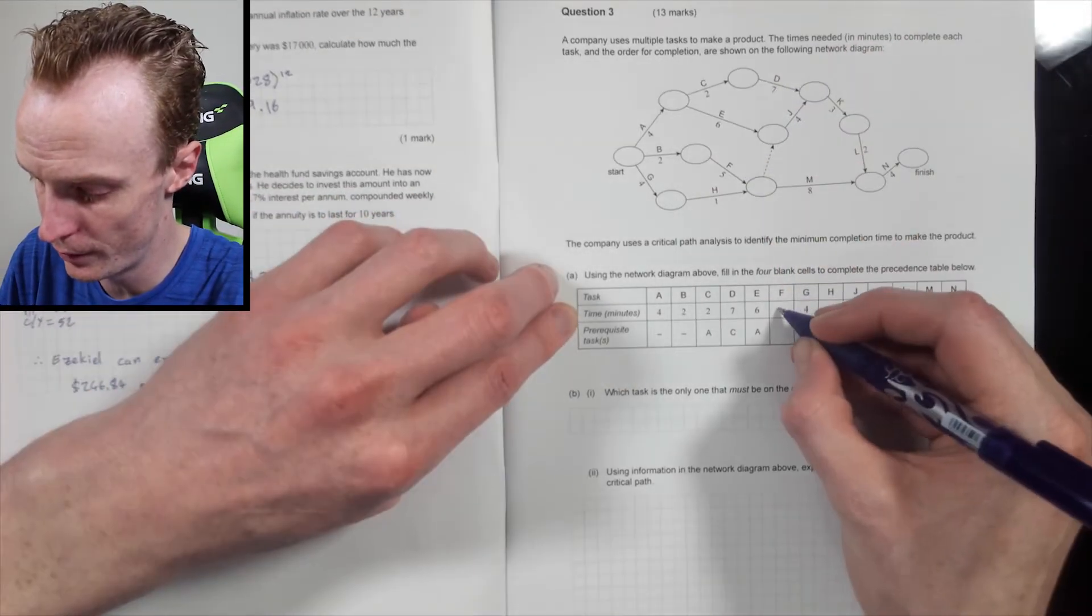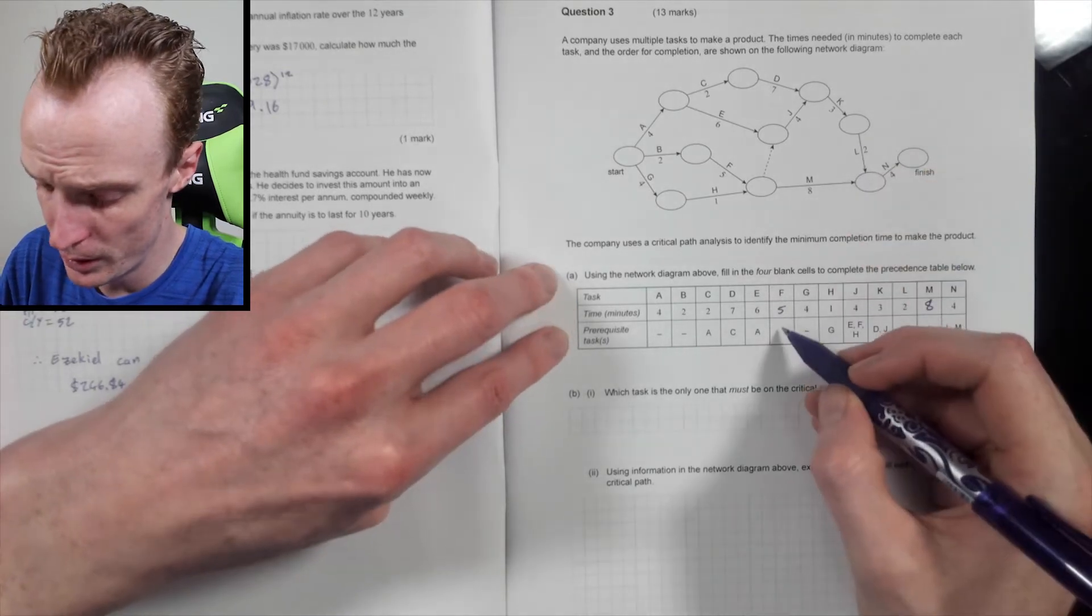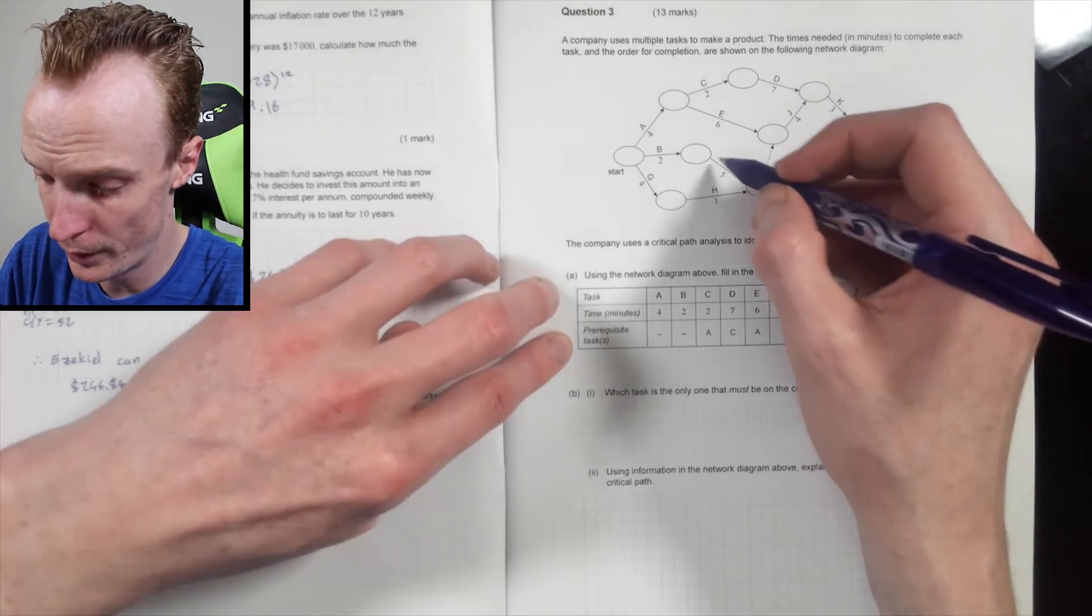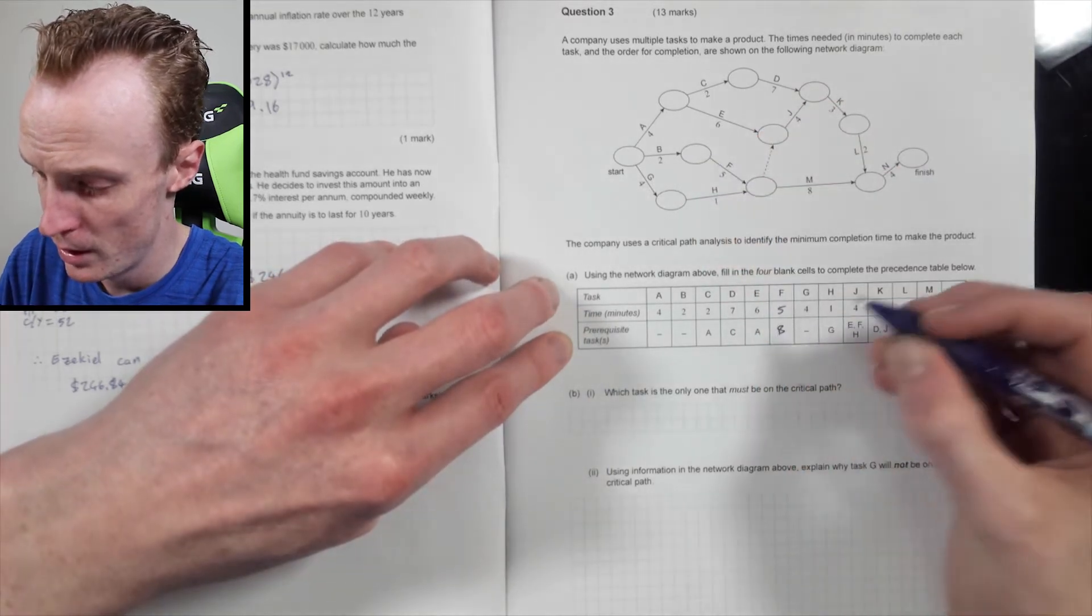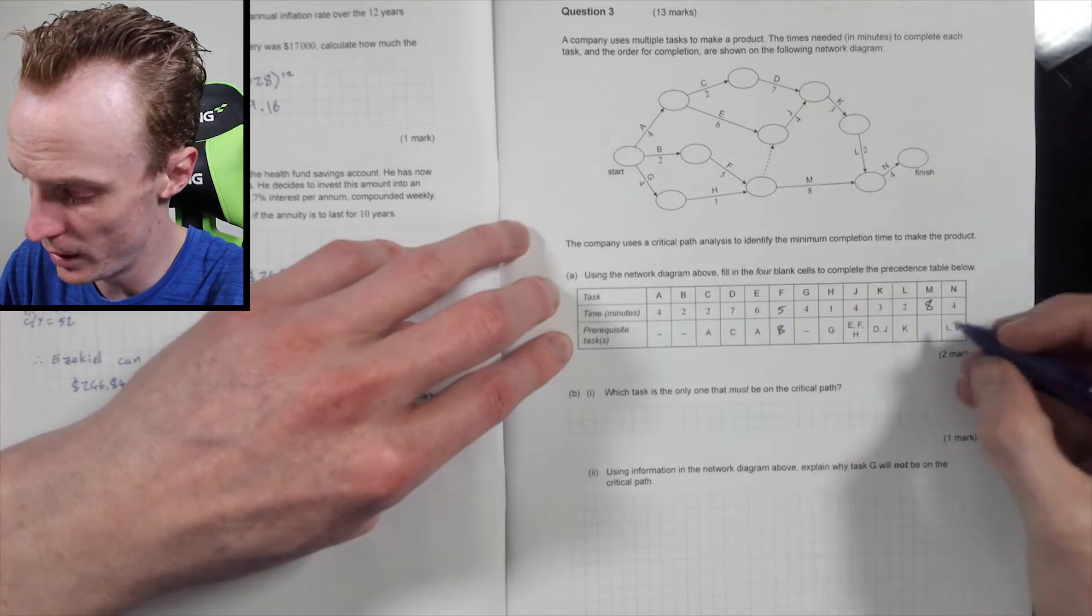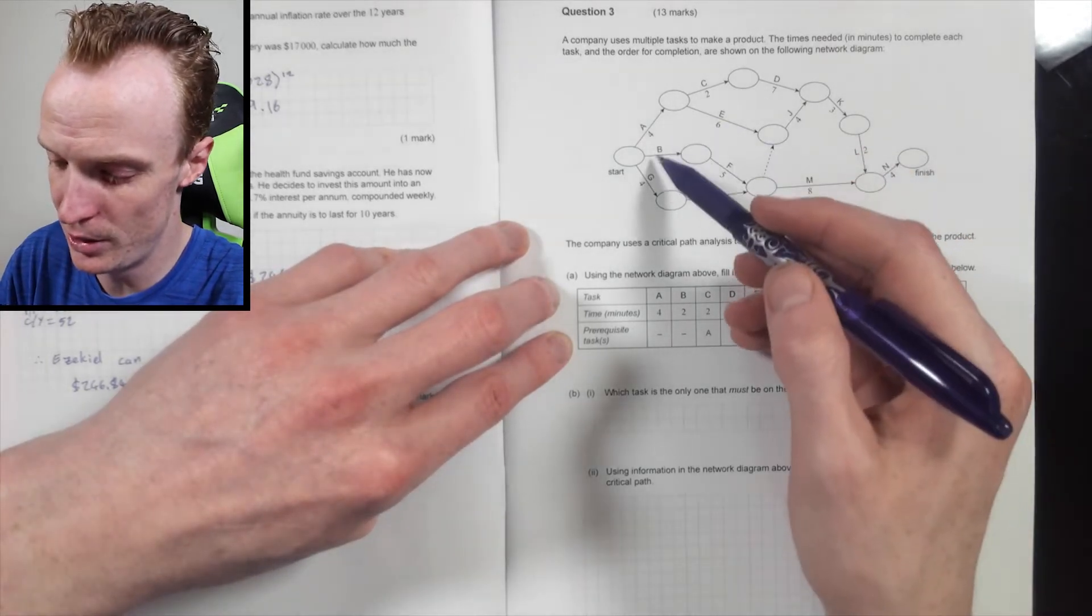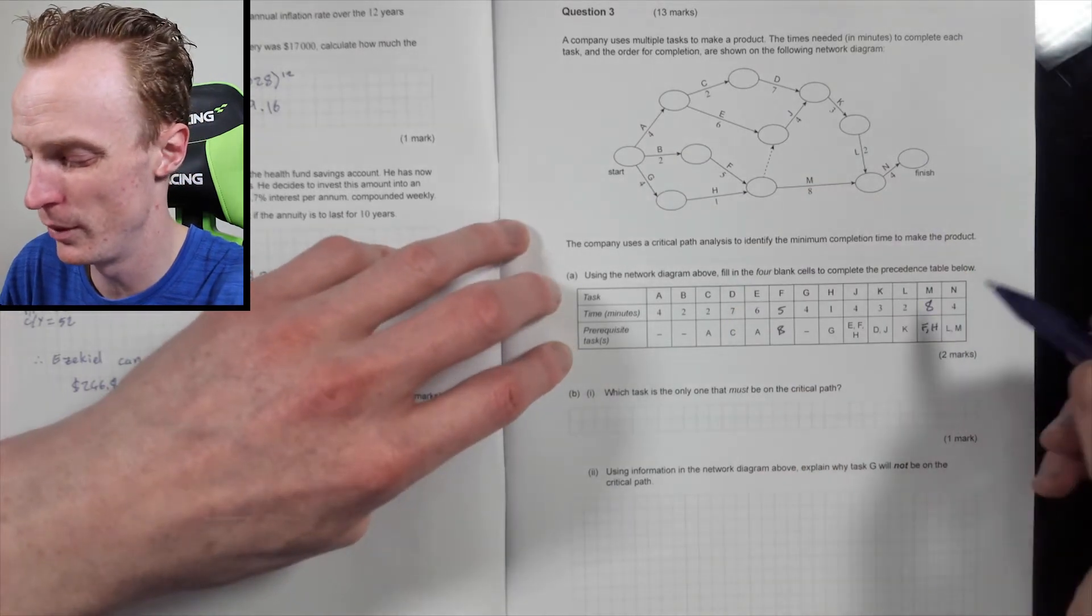So time for F is 5. Time for M is 8. What is a prerequisite to F? Prerequisite to F is B. And prerequisite to M? Prerequisite to M is F and H. Now yes, these two are also prerequisites, but you're wasting time if you're filling that in.